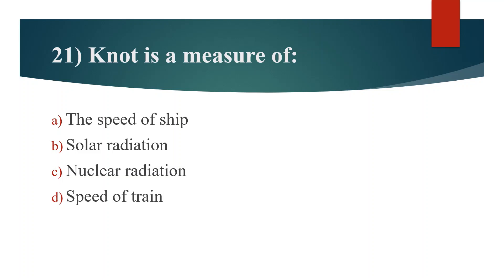Twenty-first question. Knot is a measure of. Option A: Speed of ship. Option B: Solar radiation. Option C: Nuclear radiation. Option D: Speed of train. Answer is Option A: Speed of ship.